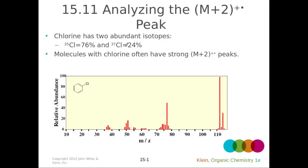Molecules that have chlorines have strong M+2 peaks because Cl-37 makes up 24% and Cl-35 makes up 76% of naturally occurring chlorine — that's a 3:1 ratio. Our molecular ion peak, in this case at 112, would be three times as large as our M+2 peak, which is at 114.